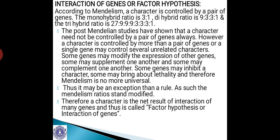According to Mendelism, a character is controlled by a pair of genes — a dominant gene and a recessive gene — and the monohybrid ratio is 3:1, the dihybrid ratio is 9:3:3:1, and the trihybrid ratio is 27:9:9:9:3:3:3:1. These are the kinds of ratios we get in Mendelian inheritance, but we are discussing about interaction of genes or factor hypothesis.